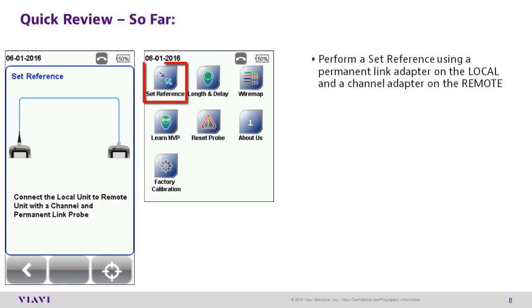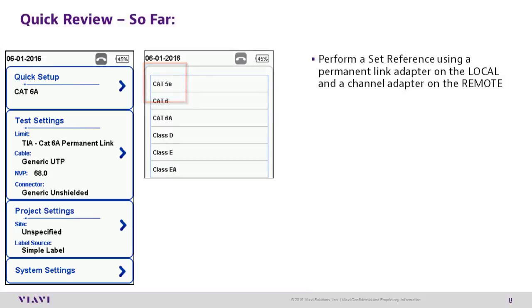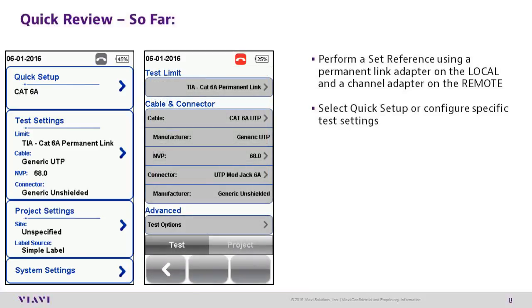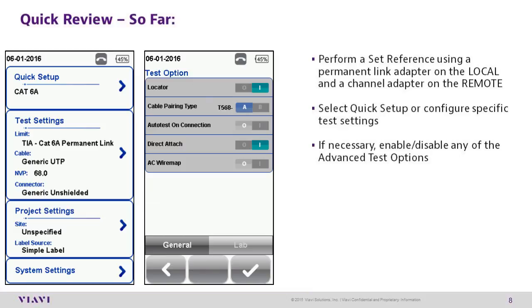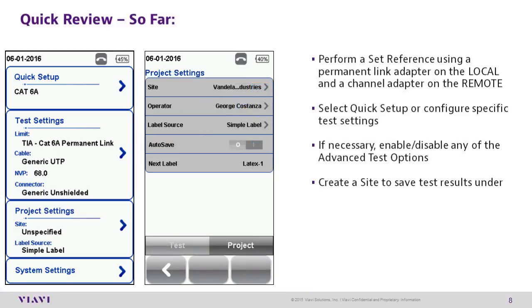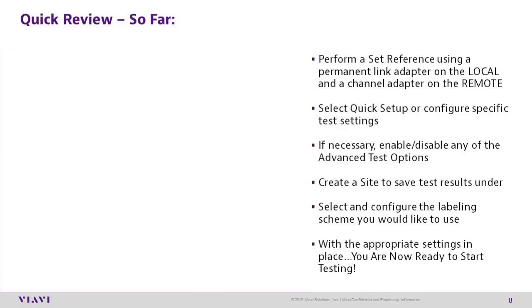Before conducting a test, let's do a quick review. Every time the firmware is upgraded, a new reference should be set. Be sure to select the appropriate Quick Setup or specific Test Settings needed to conduct the test. If necessary, enable any advanced test options. Create a site to save the test results under, and select and configure the labeling scheme you want to use. With the appropriate settings in place, you are now ready to start testing.